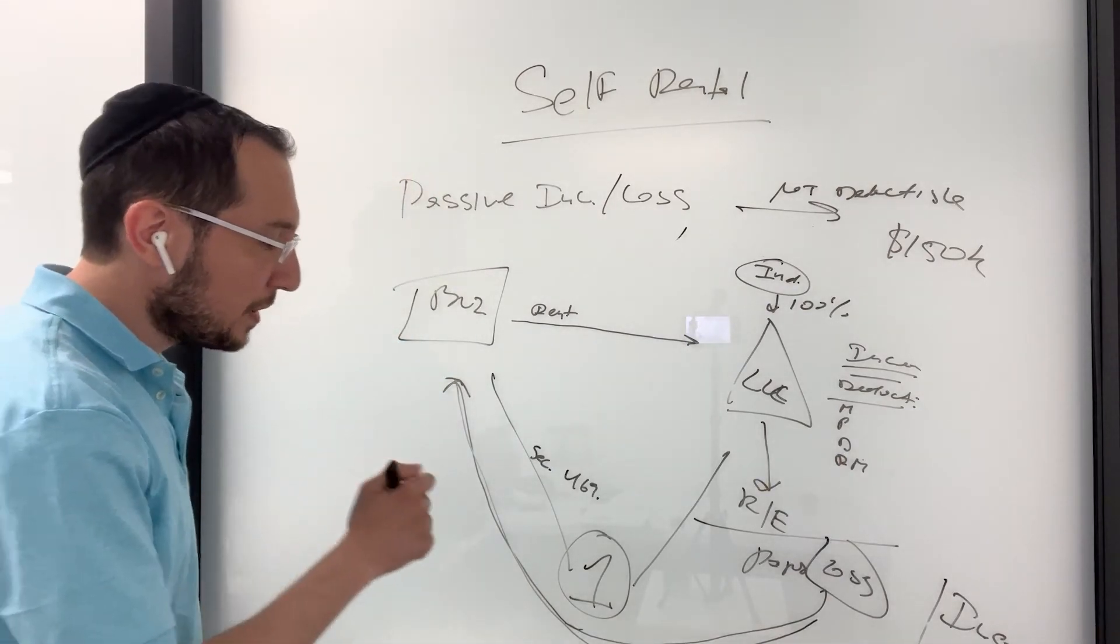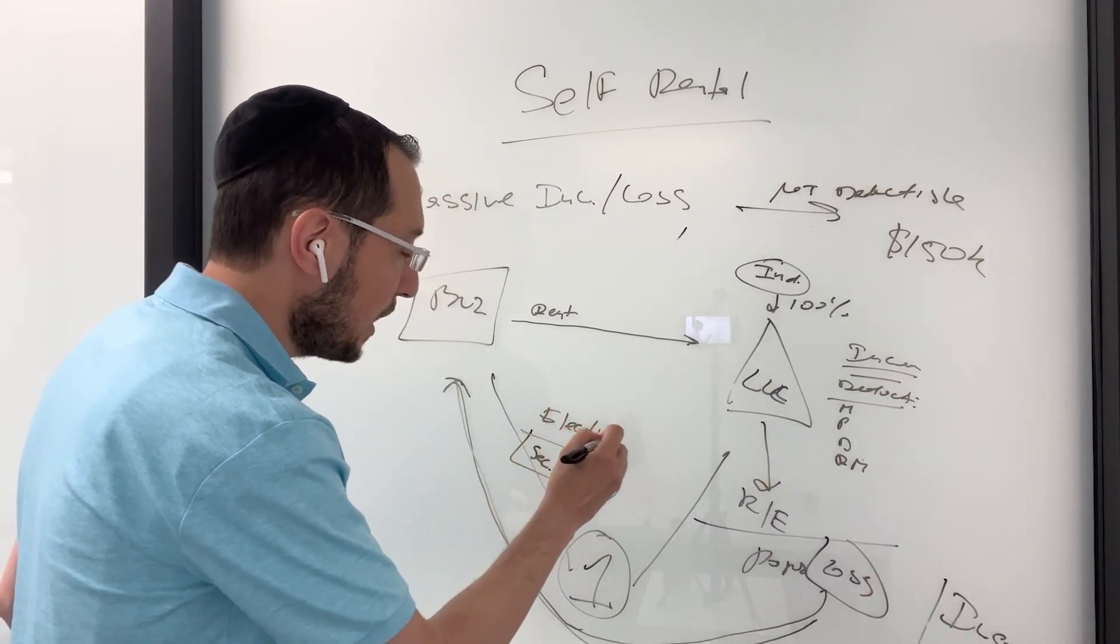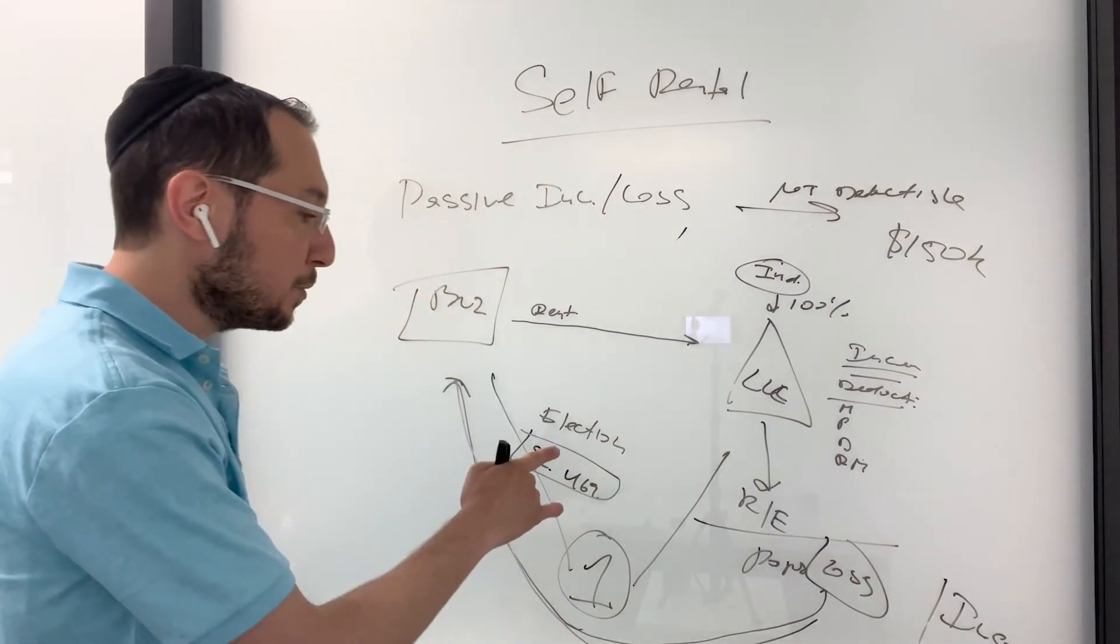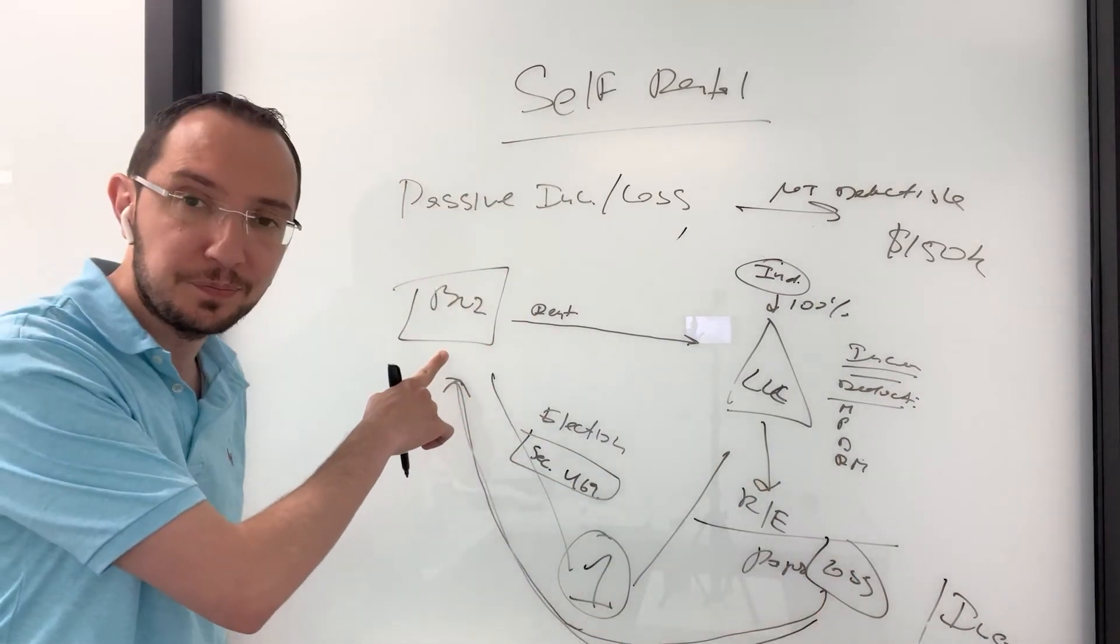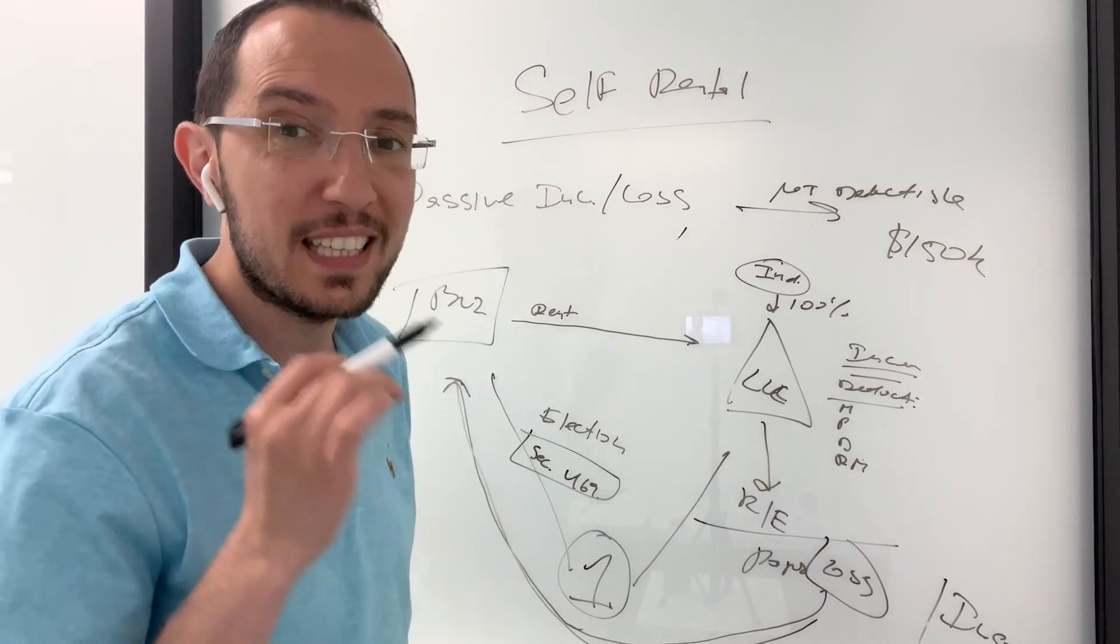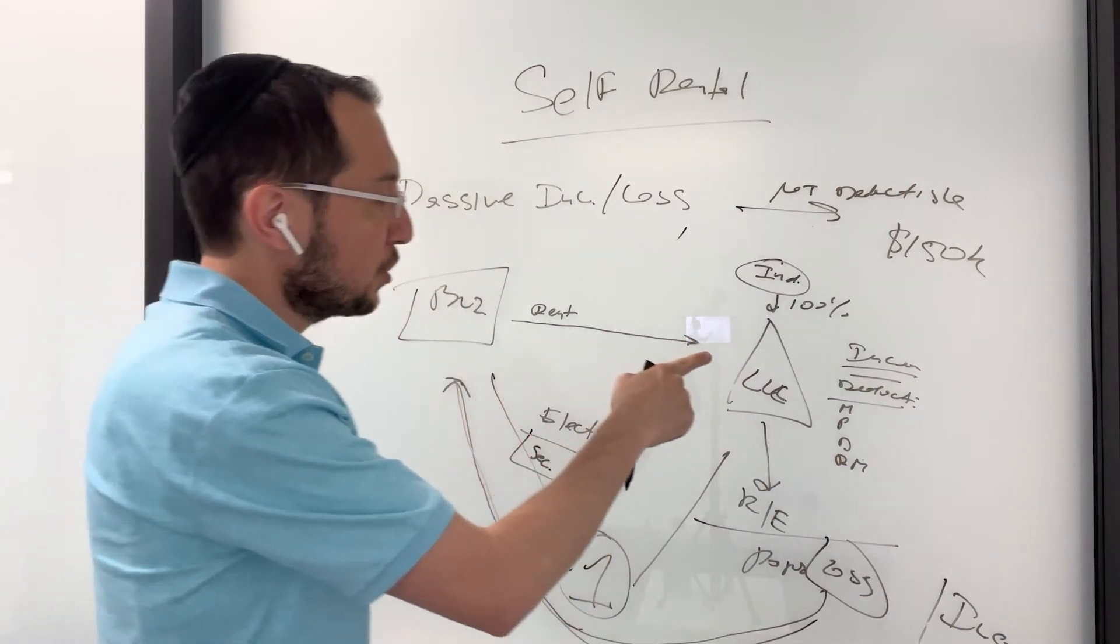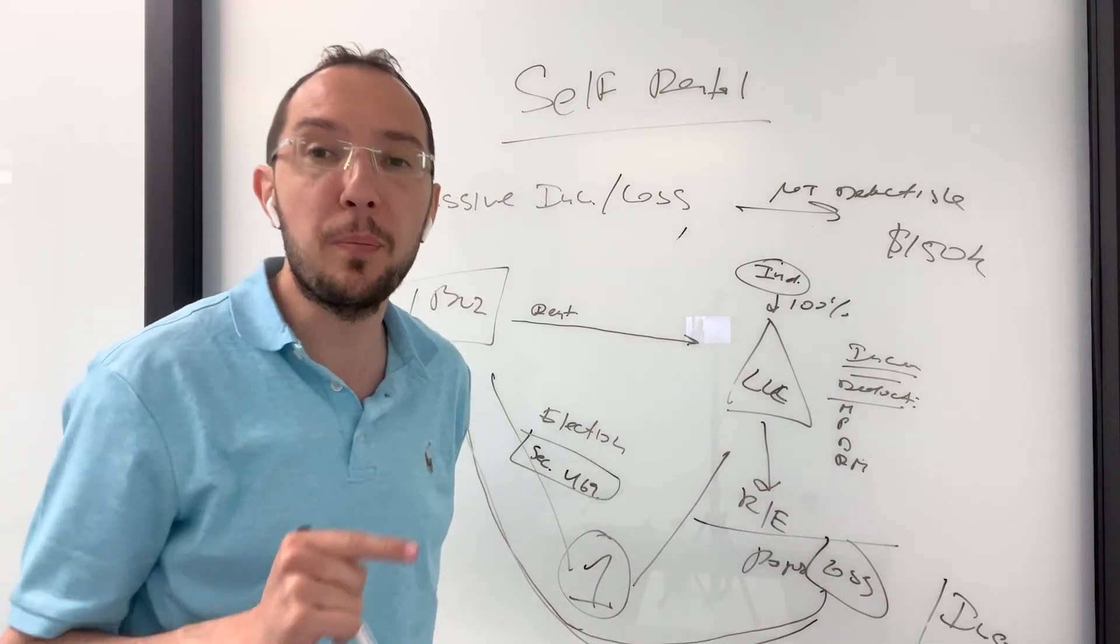And this can only be done if you make an election on your tax return. Yes, you have to make an election, make and attach a statement on your tax return saying, hey, I am doing this, so now you gotta let me take my loss against my business income. If you're not a real estate professional, and you want to take advantage of the real estate losses, one of the ways to do that is buy a commercial property that you can rent to your business. Now, the question becomes, what if I own the commercial property with a partner?